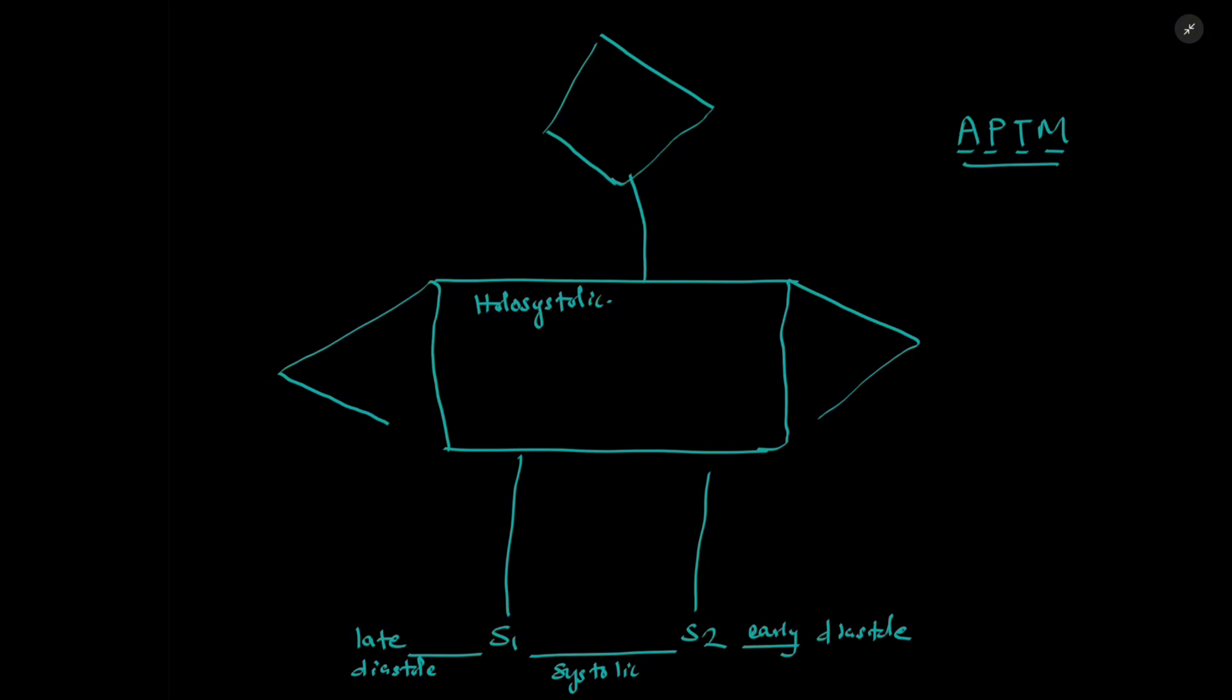Since this is our murmur man, we will address him as MR. And this is representing mitral regurgitation. And since M will always be accompanied by T, tricuspid regurgitation will also be here.